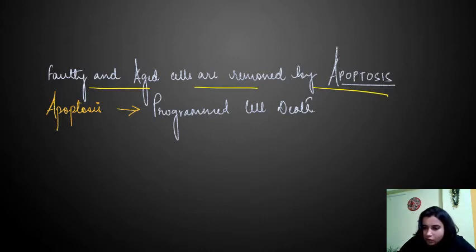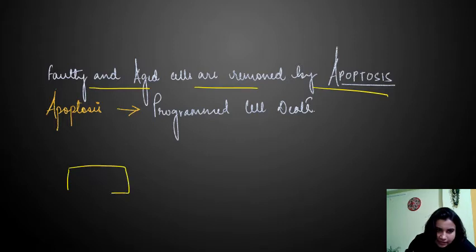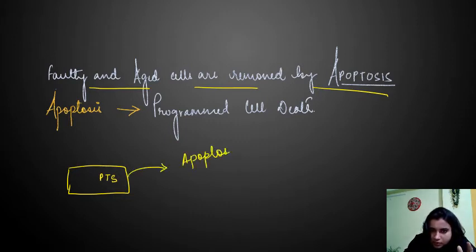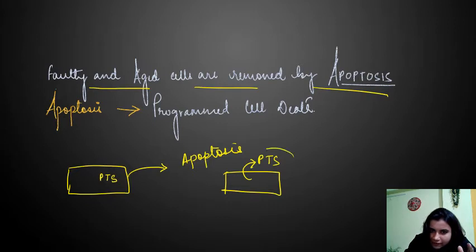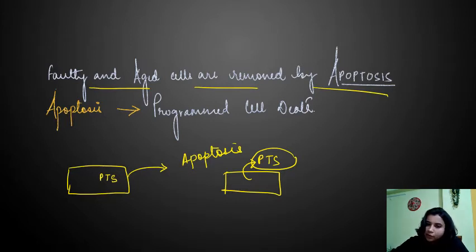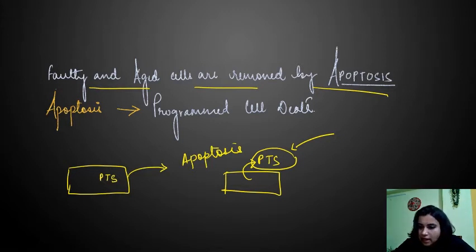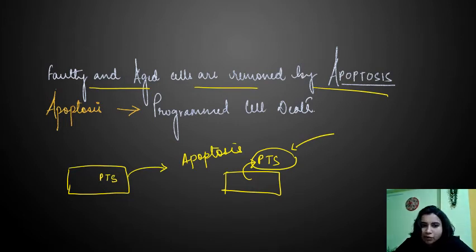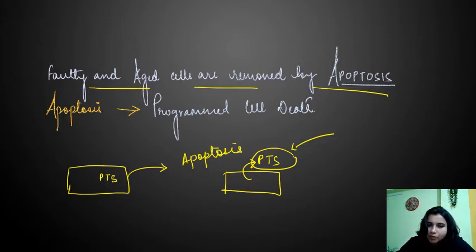For example, initially phosphatidylserine remains inside the cell. But if this cell is subjected to apoptosis, the phosphatidylserine will move out, giving a signal that it is available for apoptosis. The cell will then undergo apoptosis through intrinsic and extrinsic pathways. So faulty and aged cells are removed from our body by apoptosis, which is a programmed cell death.